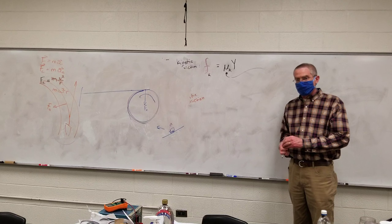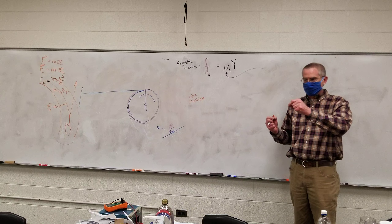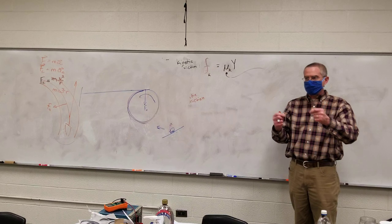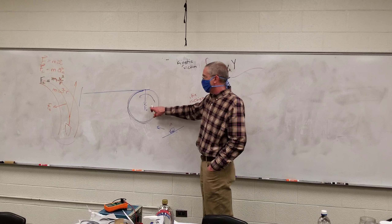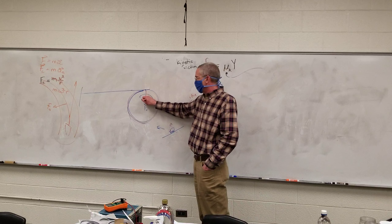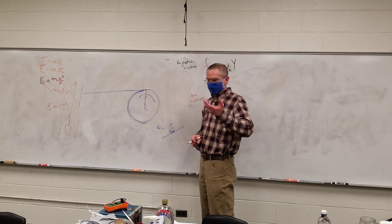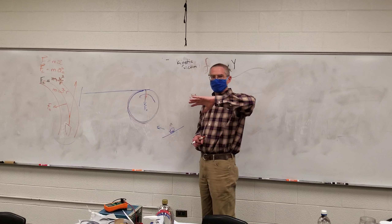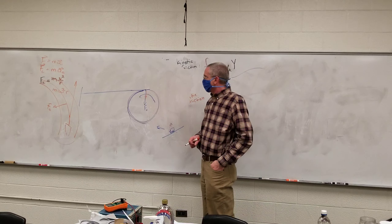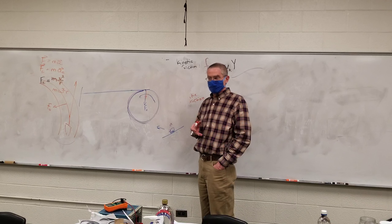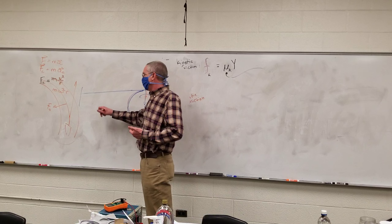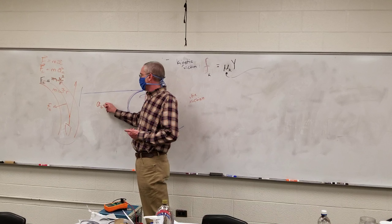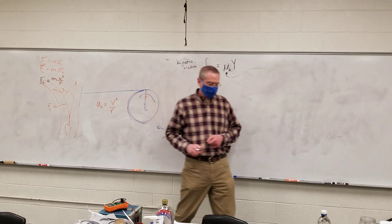Anything traveling in a circle or a curve must have some centripetal force causing it to change direction, because F = ma — the net force must be in the same direction as the acceleration. An object with centripetal force experiences centripetal acceleration, which points toward the center while it's traveling in the circle. Going back to the linear motion lab — if there's a change in direction, there is acceleration. Centripetal acceleration equals v² divided by r.